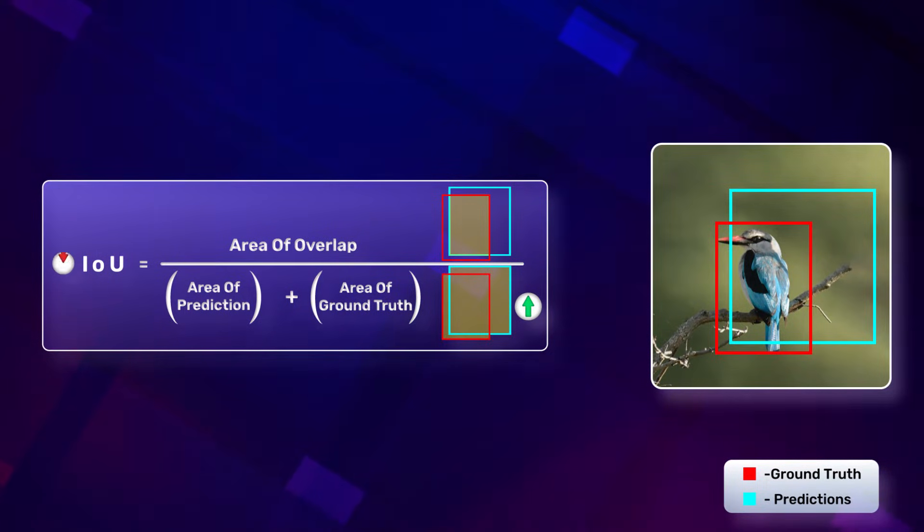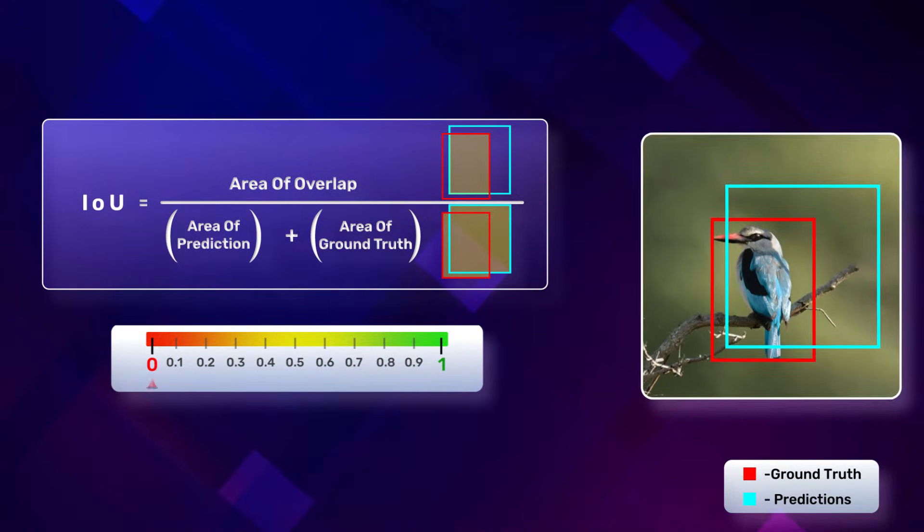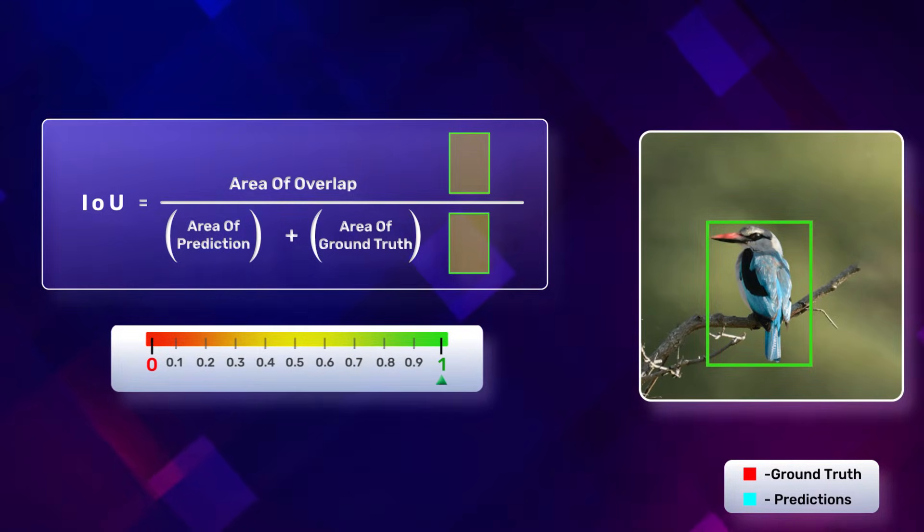This makes the IoU lower. It is expressed as a value between 0 and 1, where 0 indicates no overlap and 1 indicates a perfect match or complete overlap.